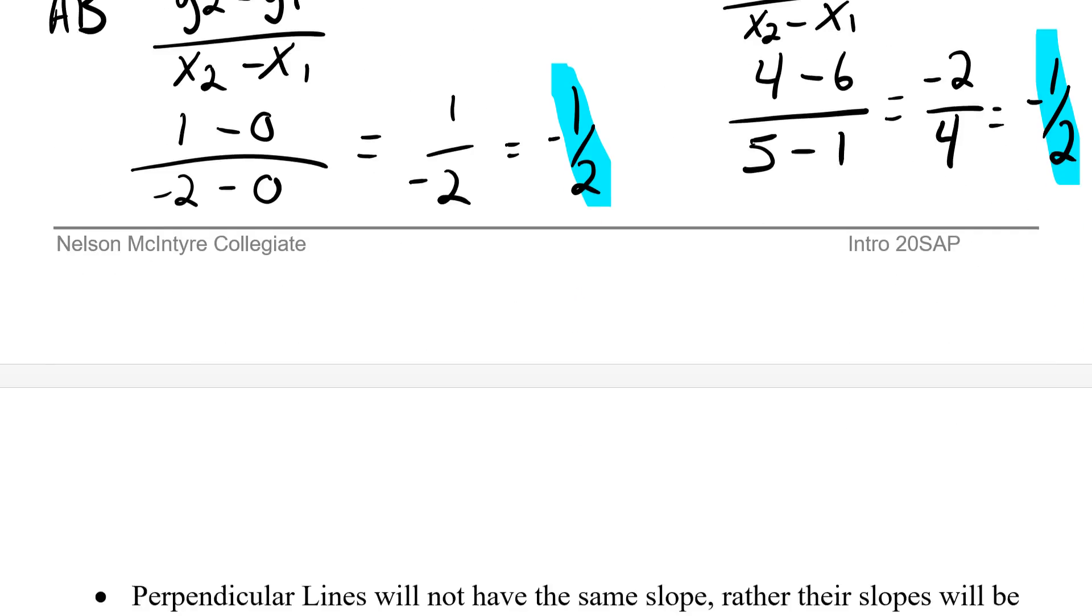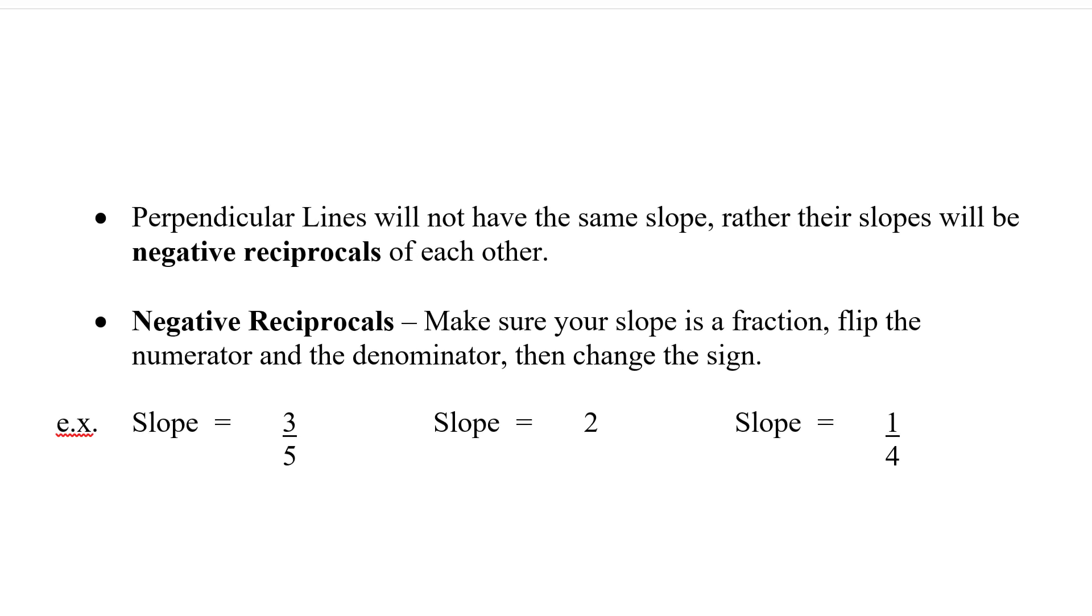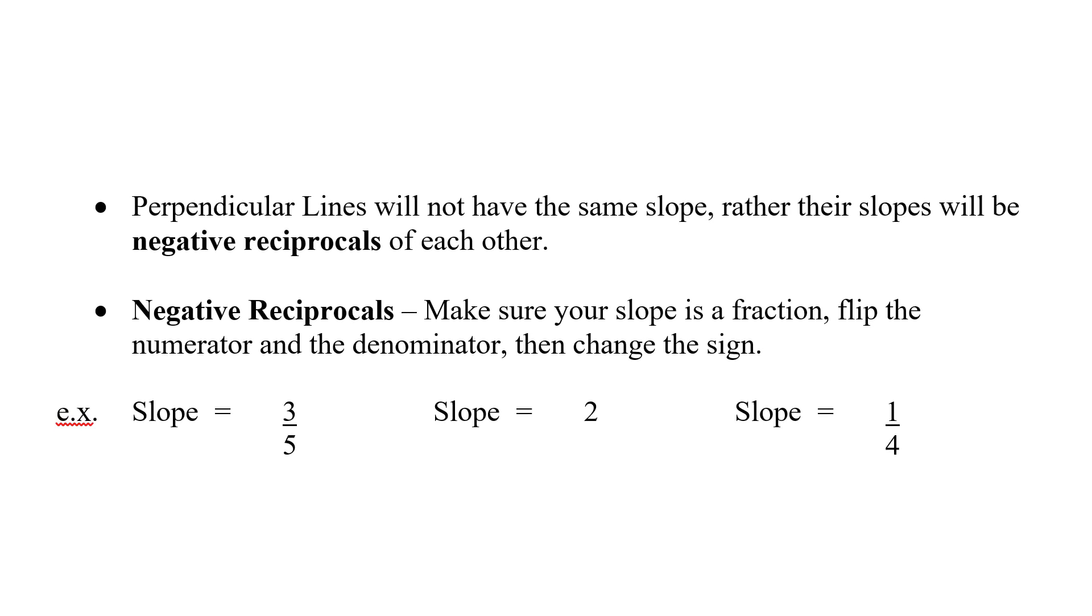Okay, so parallel lines, they have the same slope. What about perpendicular lines? Well, with perpendicular lines, the slopes are not going to be the same. In fact, there is a relationship to the slopes where they are the negative reciprocals of each other. So if I have my two lines and I calculate the slope, and they are negative reciprocals, then I have perpendicular lines. The question now becomes, what's a negative reciprocal?